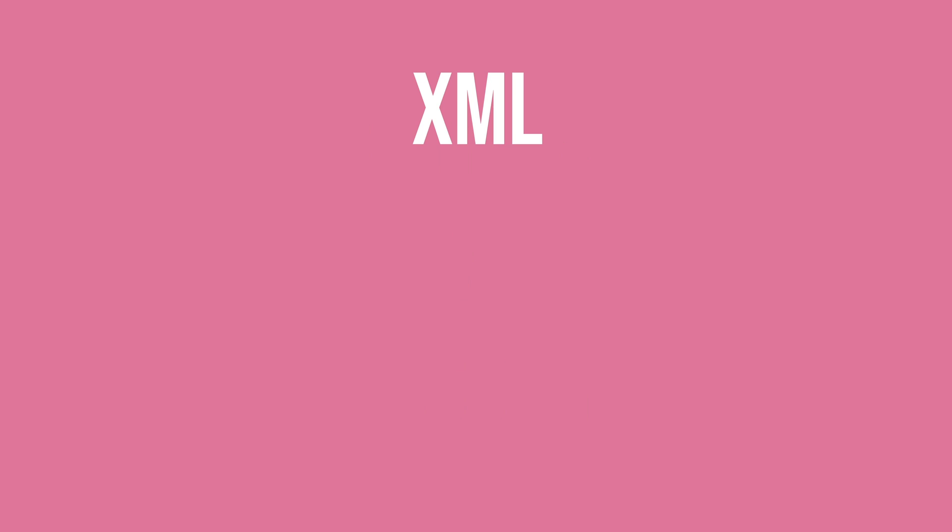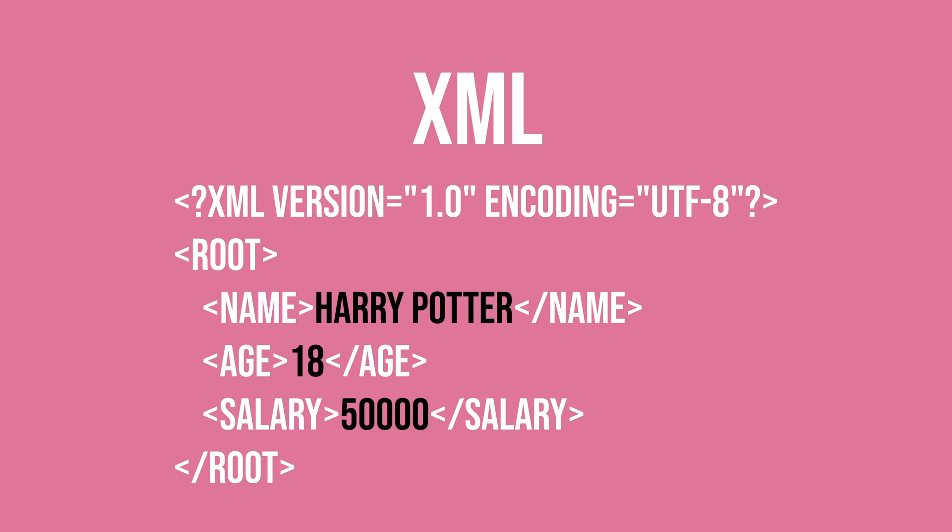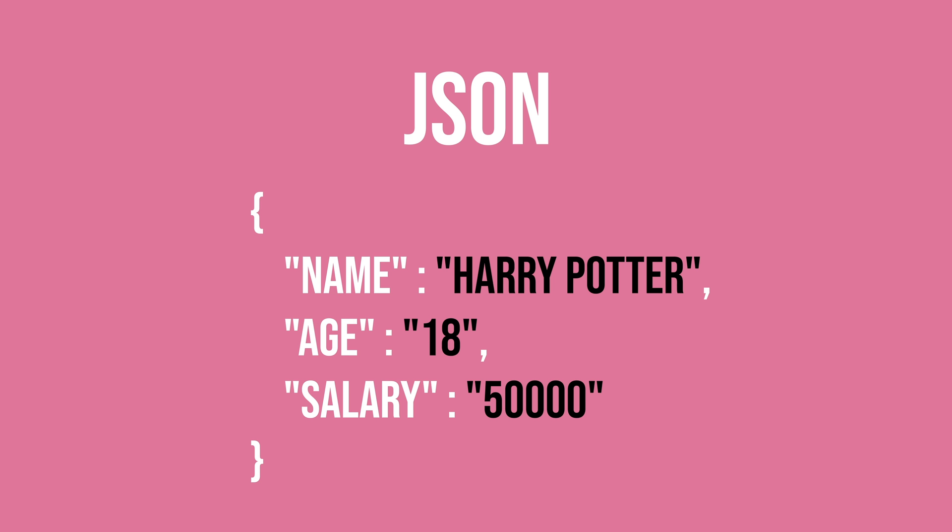Now what does the data that gets sent over look like? The two main formats are XML and JSON. XML stands for extensible markup language — it looks very much like HTML but the tags are defined by the developer. In our example, we're passing three fields: name, age, and salary. The client sends this data in the body of the HTTP request and the server knows how to parse it.